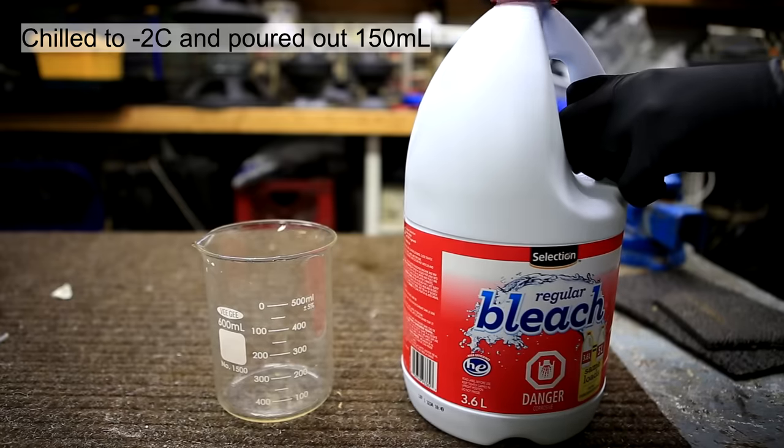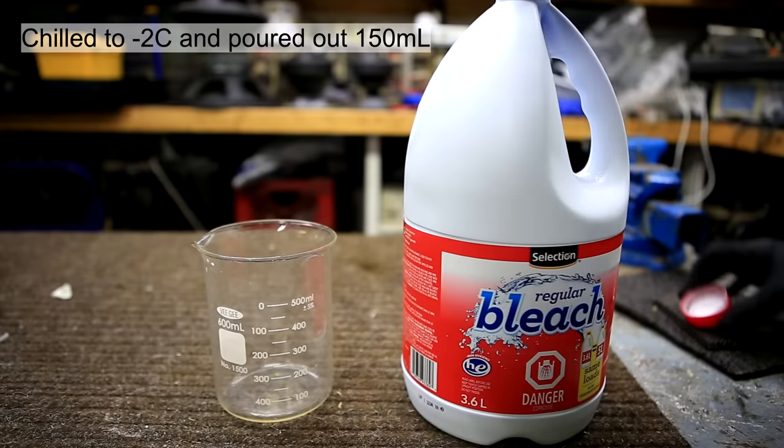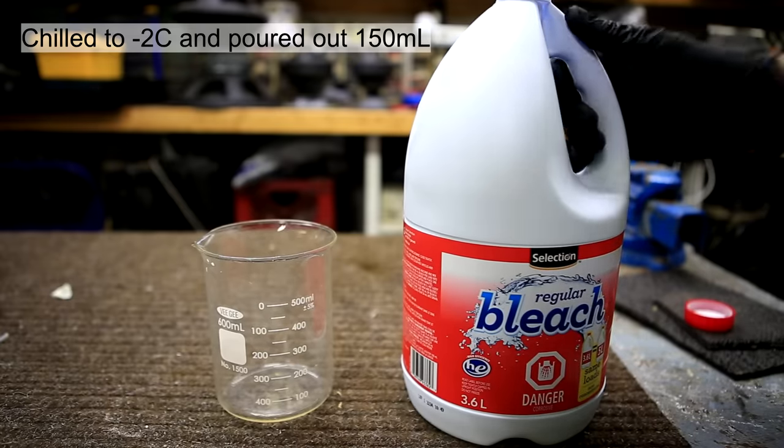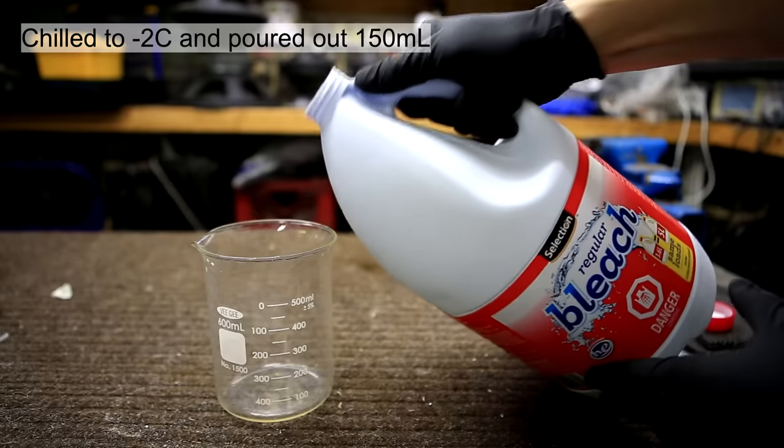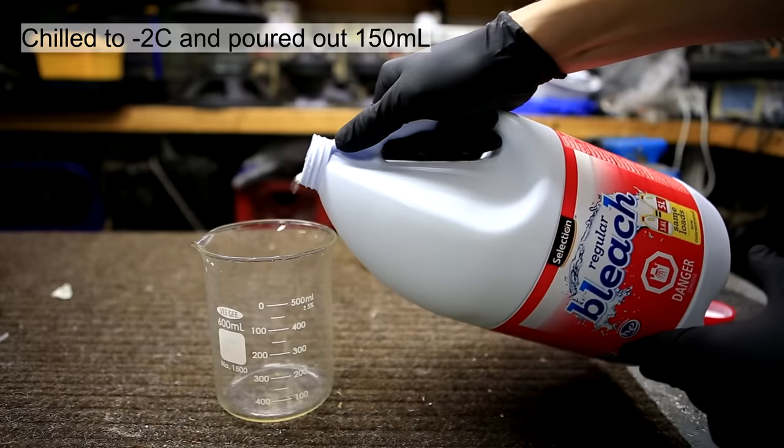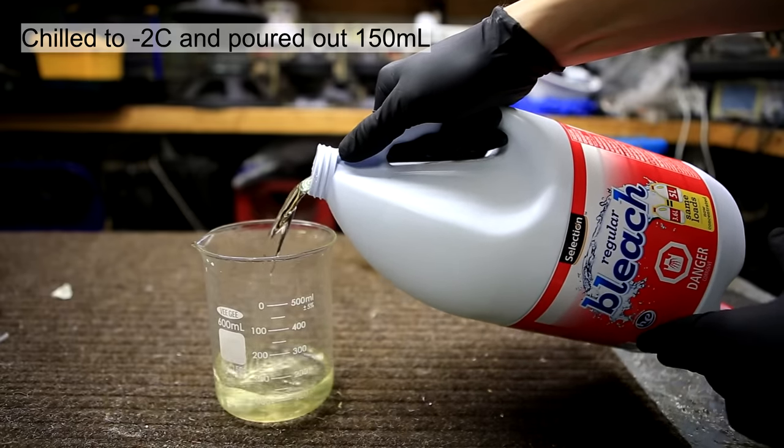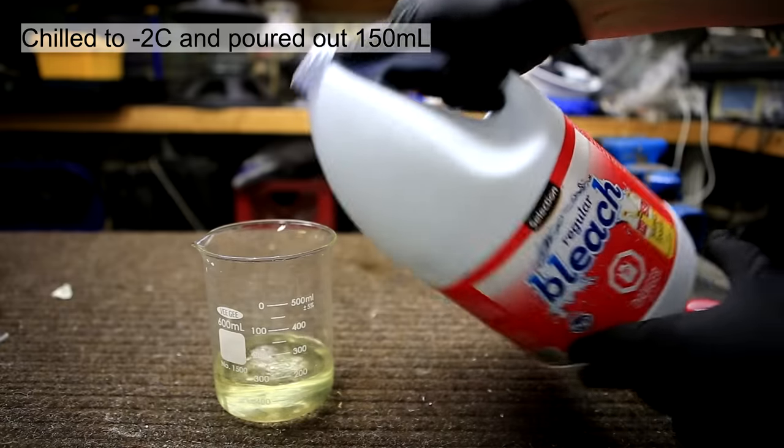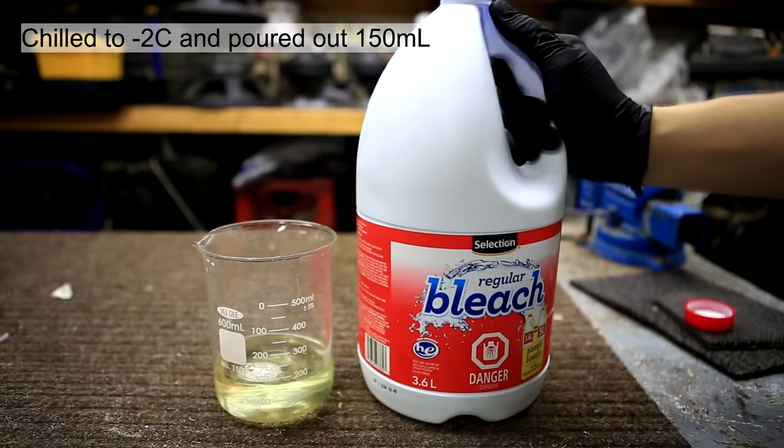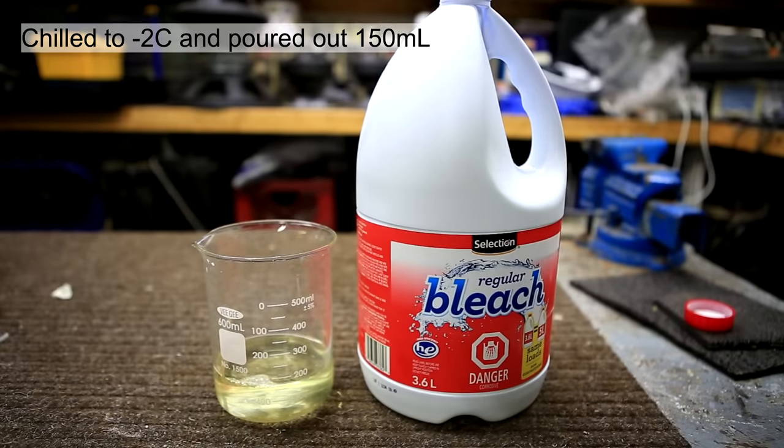The bleach was chilled to about negative 2 degrees Celsius and 150 milliliters was poured out. 150 milliliters is removed to make sure that it has enough space to add the acetone as well as to shake it. The reaction of bleach with acetone is extremely exothermic and it's absolutely necessary to cool it to at least 0 degrees Celsius before the addition.